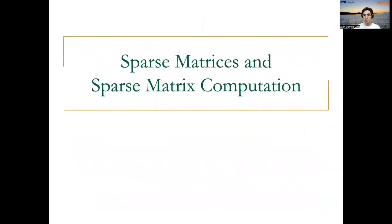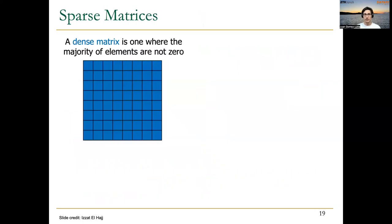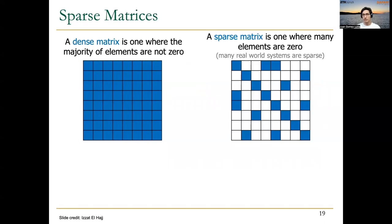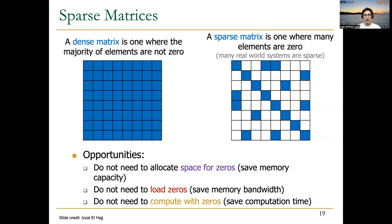Today, we talk about sparse matrices and sparse matrix computation. First, let's define what a sparse matrix is. We all know what a dense matrix is — a matrix where the majority of elements are not zero. In a sparse matrix, the majority of elements are zero. Sparse matrices offer some opportunities: there is no need to allocate space for zeros, which can save memory capacity; there is no need to load zeros from memory, which saves memory bandwidth; and there is no need to compute with zeros, which saves computation time.